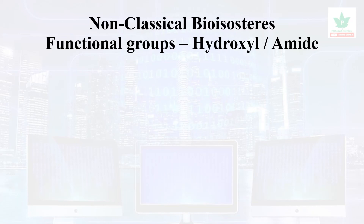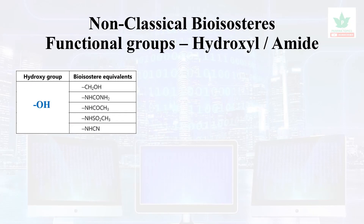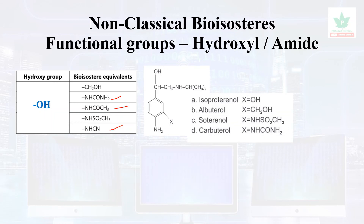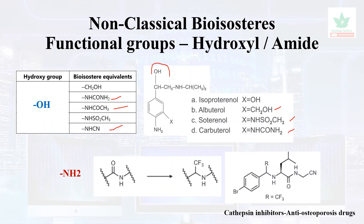Hydroxyl bioisosteric equivalents include NHCONH2, NHCOCH3, and NHCN. When the OH group is replaced with CH2OH, NHSO2CH3, or NHCONH2, more potent antihistaminic compounds result. Amide groups are important in protein chemistry; replacement with CF3 gave rise to an anti-osteoporotic compound which is a cathepsin inhibitor.